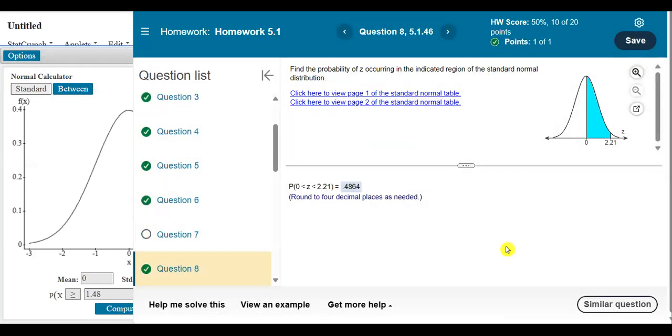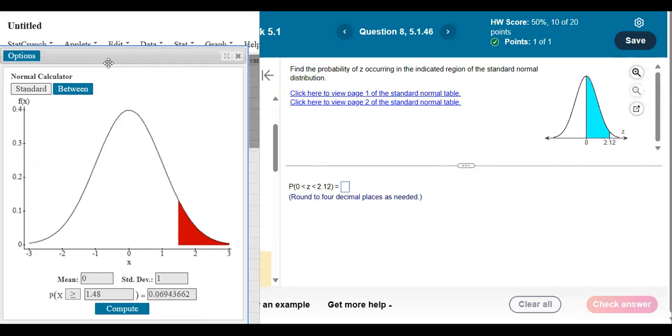Let's do another one. How about this one? So if you have an area between two z-scores, same process. Open up StatCrunch and open up the Normal Calculator.